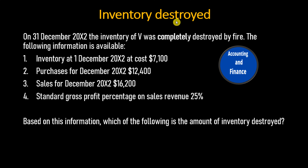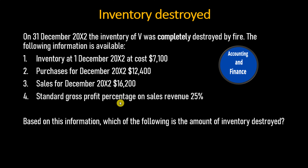Inventory destroyed. On 31 December 20X2, the inventory of V was completely destroyed by fire. The following information is available: 1. Inventory at 1 December 20X2 at cost $7,100. 2. Purchases for December 20X2, $12,400. 3. Sales for December 20X2, $16,200. Standard gross profit percentage on sales revenue 25%. Based on this information, which of the following is the amount of inventory destroyed?